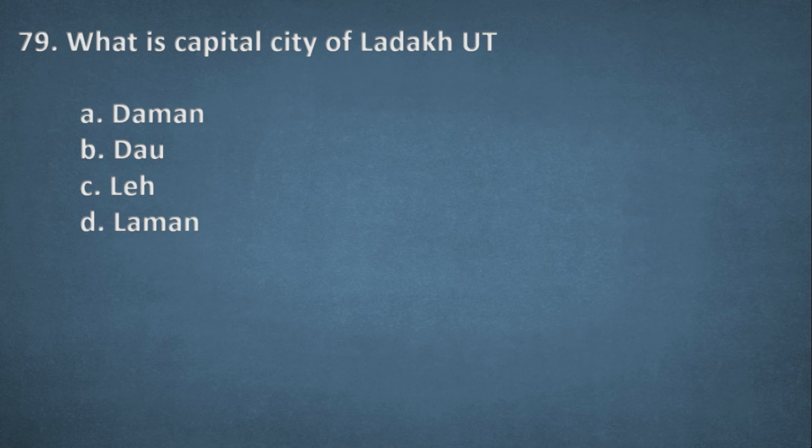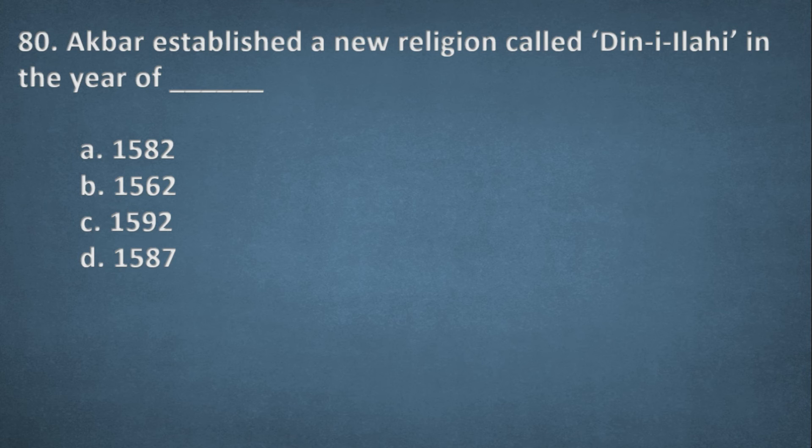Next one. What is the capital city of Ladakh Union territory? Options: Daman, Dehu, Leh, Lehman. The right option is C, Leh. Next one. Akbar established a new religion called Din-i-Ilahi in the year of. Options: 1582, 1562, 1592, 1587. The right option, A, 1582.